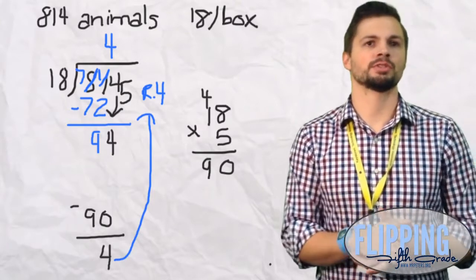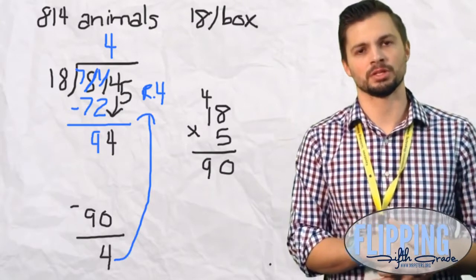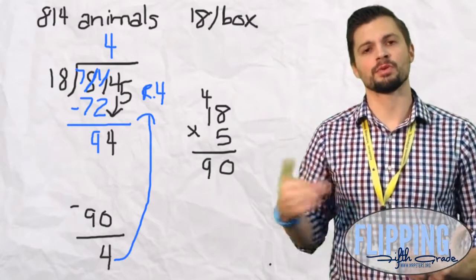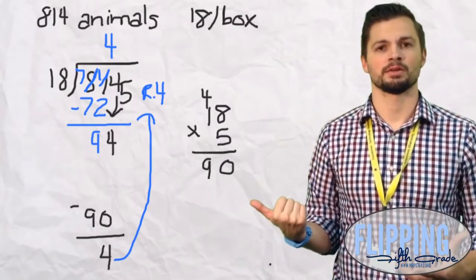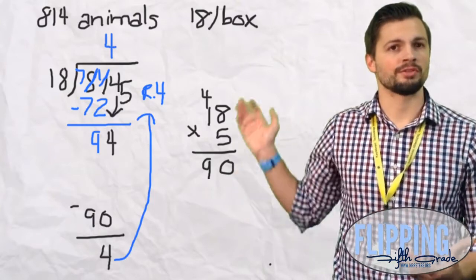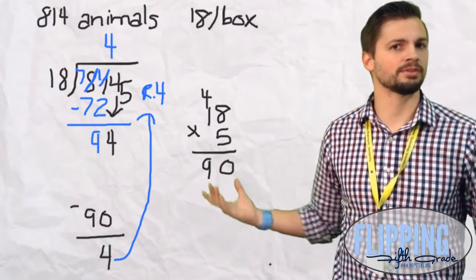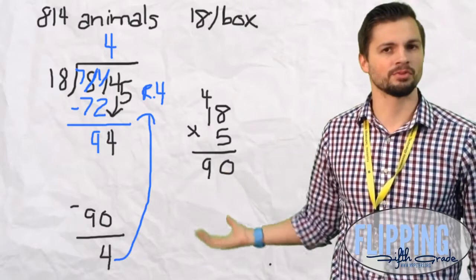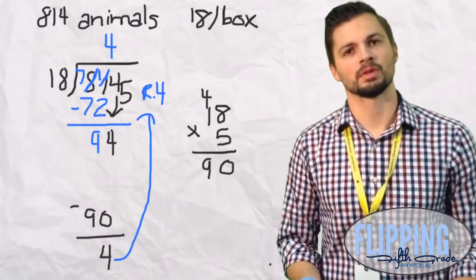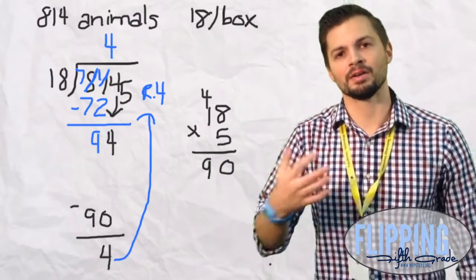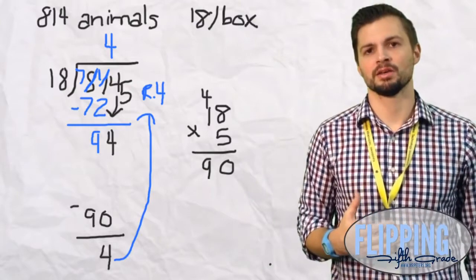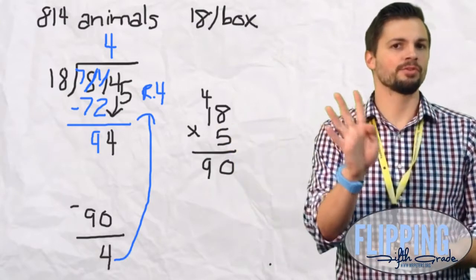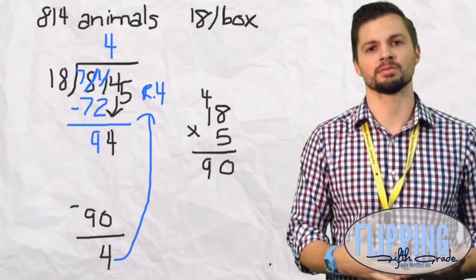And they had 814 stuffed animals and 18 in each box. So if they want to figure out how many boxes they need, we have to use reasonableness. So they have 45 full boxes but they have 4 stuffed animals left over. So what must they do? You're right, they must take in and get in another box because they need to put all of them away. So the last box will only have 4 stuffed animals and that's where the remainder comes in.